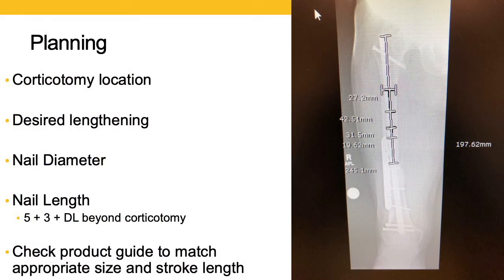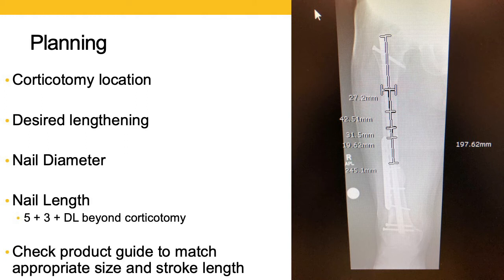A good rule of thumb when selecting a nail length would be to add five centimeters for the portion of the nail that will be overlapped in the distal segment, plus three centimeters for the exposed tip of the nail where your interlocking screw is going to be, plus the desired lengthening or excursion. When you add that up and add it to the length of the proximal segment, that should give you your minimum nail length. You're going to need to match the patient anatomy with the product guide to find the right nail diameter and stroke length. In this case, the desired nail length is about 245mm with a desired lengthening of about 42 millimeters.